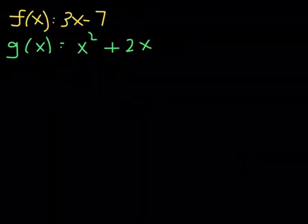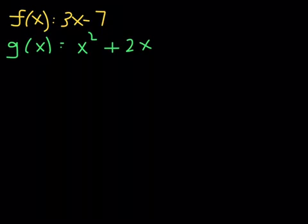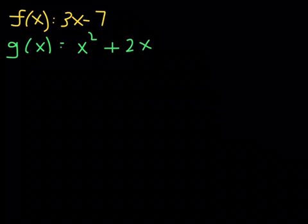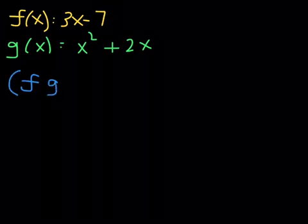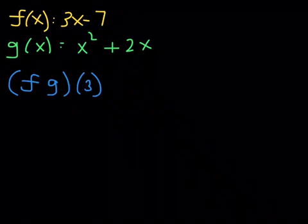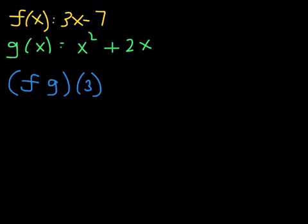So f is still 3x minus 7. g of x is still x squared plus 2x. This time around, I want to know if you can find f times g at 3. So again, this is you finding a function value. This time around, 3 is your input. Notice that you're plugging 3 into a product function, f times g. Now, I'm going to challenge you to pause this video right here. Try this out on your own, and then I'll check back in with you in just a few seconds. So go ahead and pause the video. Give this a shot.